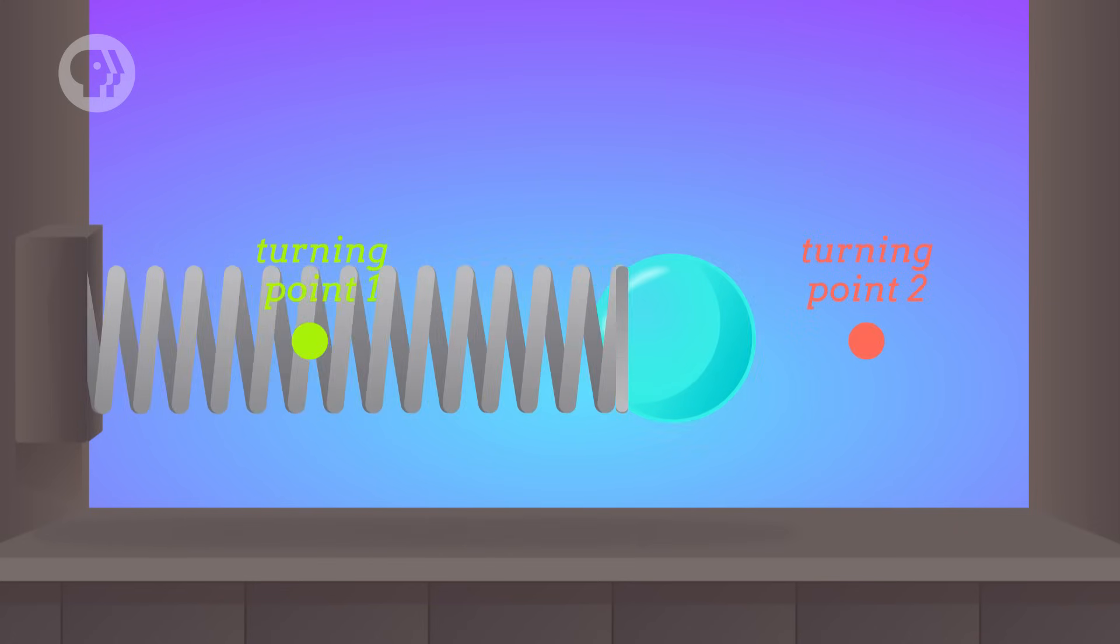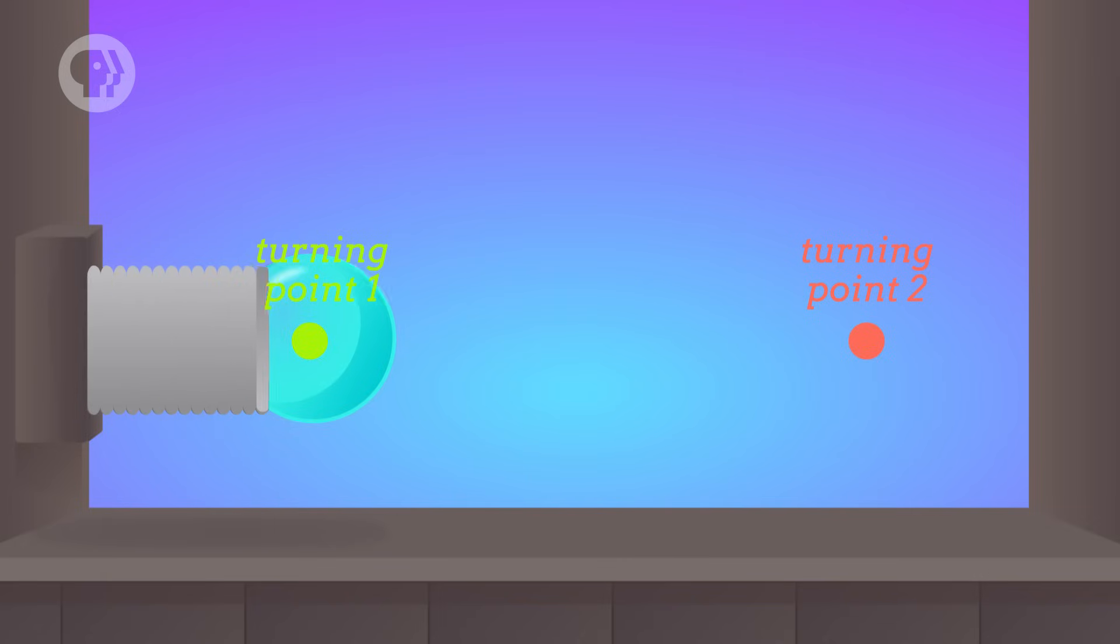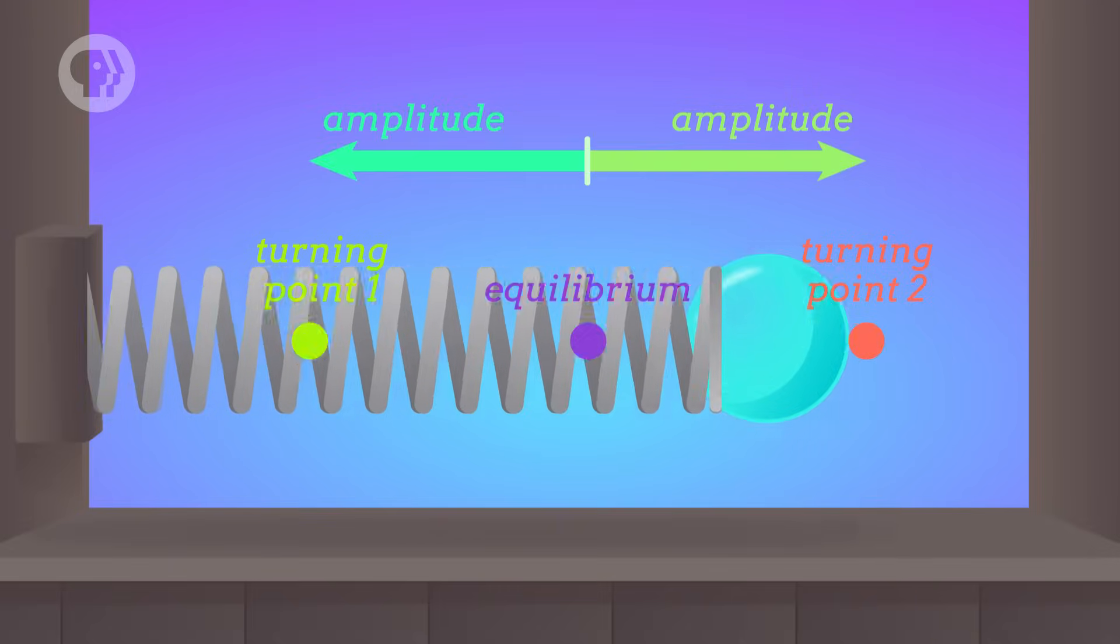Kinetic energy is the energy of motion, and as the ball moves, there are two points – the turning points, where it's not moving. One point is where the spring is compressed all the way, and the other is where it's stretched all the way. And the distance between either of these two points and the equilibrium point is called the amplitude.